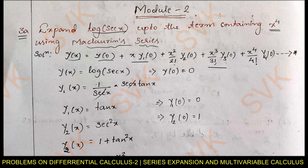We have been asked for the expansion up to x⁴, so I have written the series up to x⁴. Now, considering the given problem y(x) = log(sec x) and substituting x = 0 — McLaurin series is always valid with initial value x = 0 — at y(0) we get log(sec 0). Since sec 0 = 1, log(1) = 0.